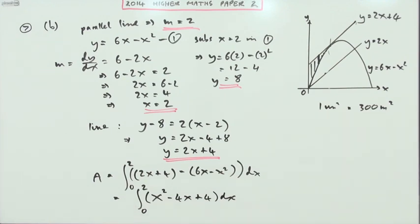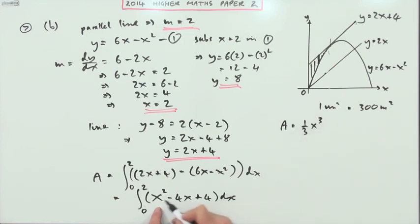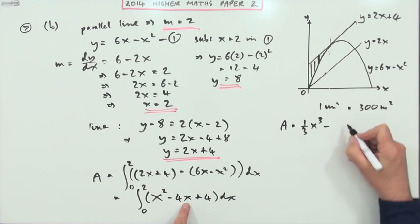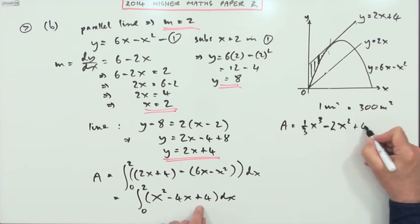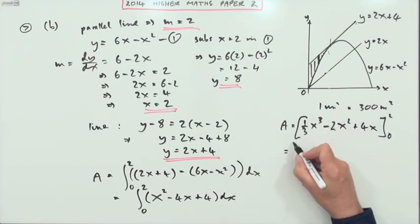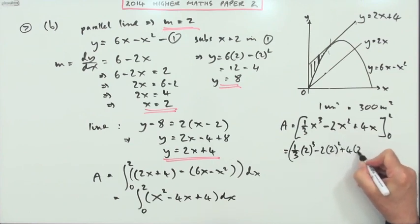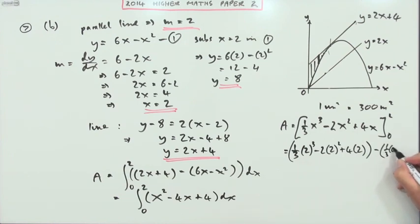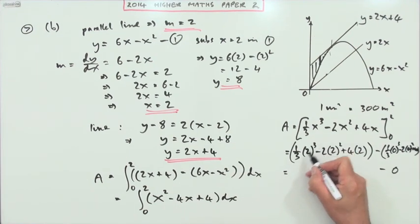That's what I'll need to integrate, and remember, each unit is 300. So I've got the area will be one third of x cubed, add 1 to the power, divide by the power, minus that'll go to x squared, dividing by 2 makes that 2, plus that'll go back to a linear term, 4x. This is evaluated from 0 to 2. So that'll be a third of, now the tedious bit, the substitutions, 2 cubed minus 2 times 2 squared plus 4 times 2, minus a third of 0 cubed minus 2 times 0 squared plus 4 times 0. That's just 0.